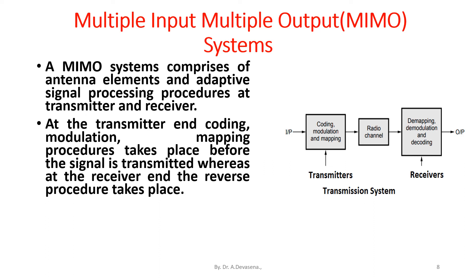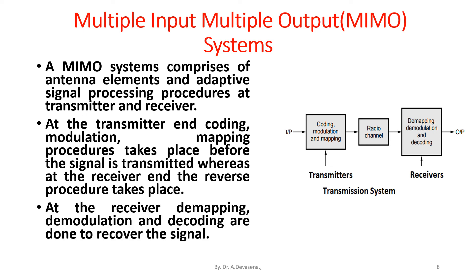A MIMO system comprises antenna elements and adaptive signal processing procedures at the transmitter and receiver. At the transmitter end, coding, modulation, and mapping procedures take place before the signal is transmitted. At the receiver end, demapping, demodulation, and decoding are done to recover the signal.